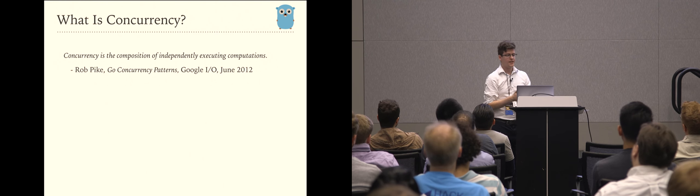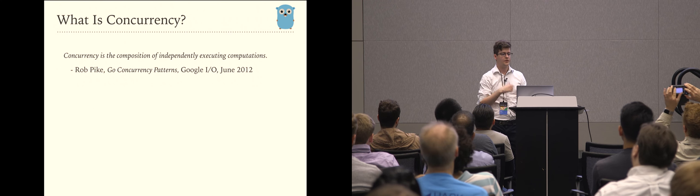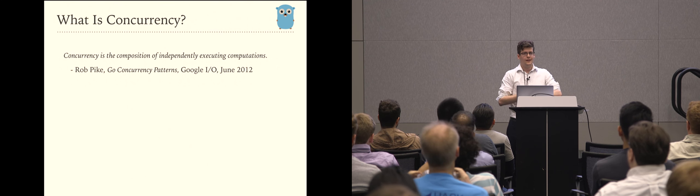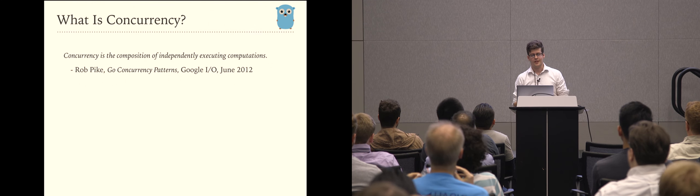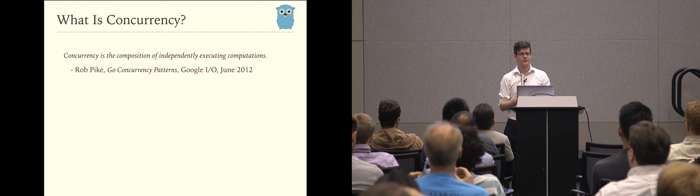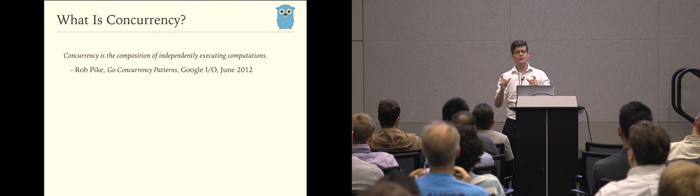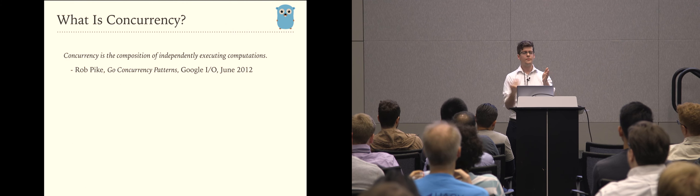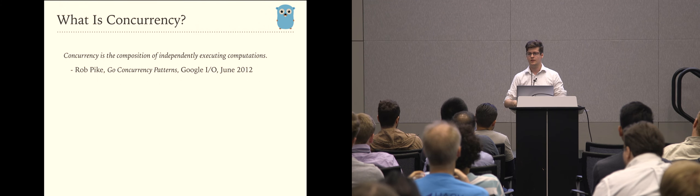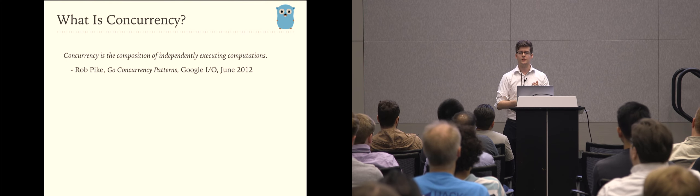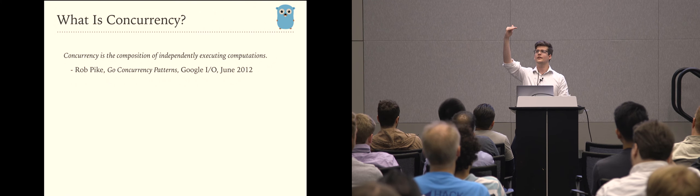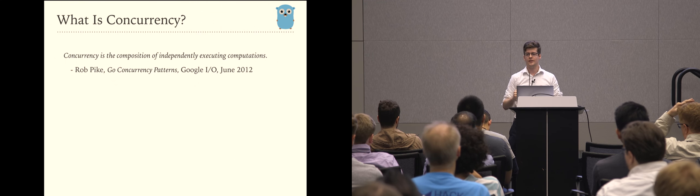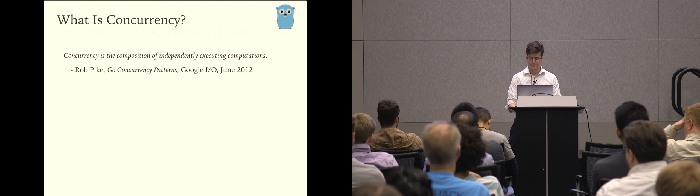Very briefly, what is concurrency? Rob Pike describes concurrency as the composition of independently executing computations. You could think of concurrency as being able to do multiple things at once, or at least being able to context switch between multiple different things. So it's like, oh, I have this one thing going on over here, and then I want to go do something else, but I also want to be able to return to what I was doing beforehand. This ability to interrupt your application — from within a single process or potentially multiple processes — do something else, and then come back. We are doing things in non-deterministic order.